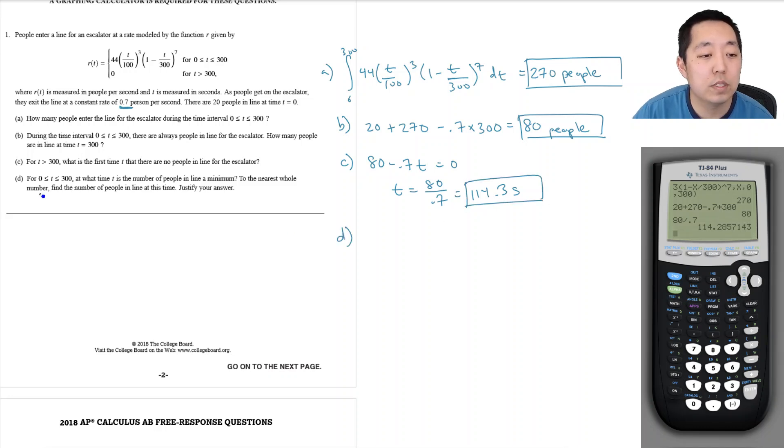Part D: For 0 less than or equal to t less than or equal to 300, at what time t is the number of people in line a minimum? The number of people at any given time is the integral of r(t) minus 0.7 dt, the rate they're entering minus the rate they're leaving, plus it started out with 20 people.